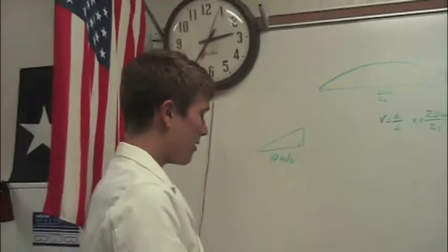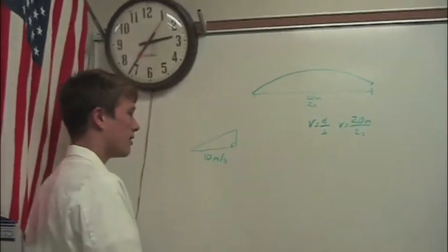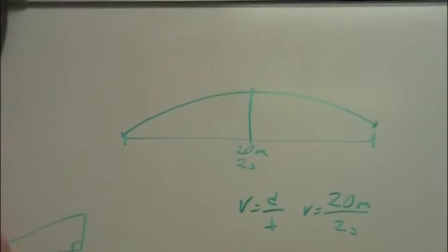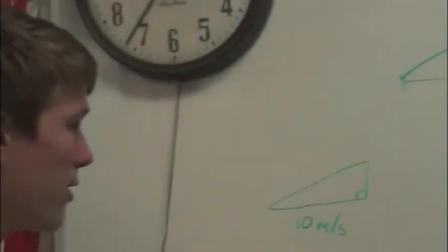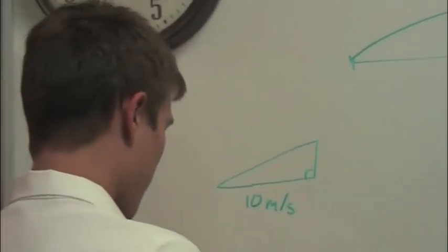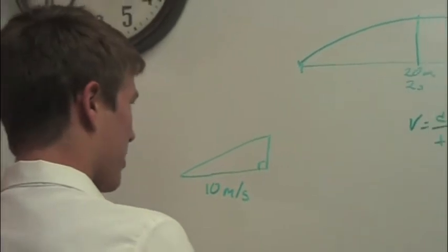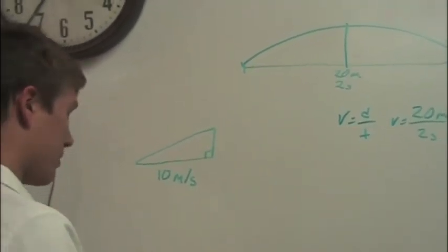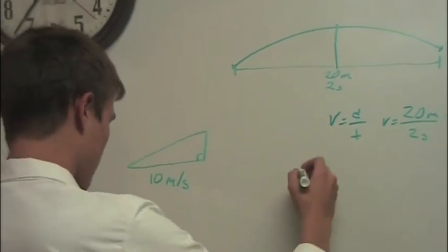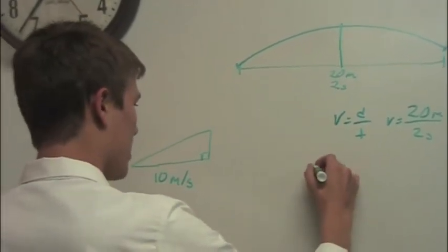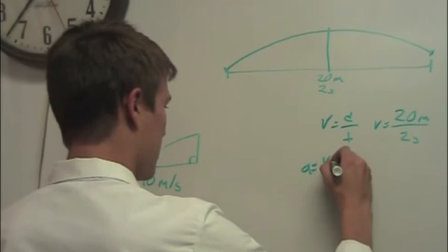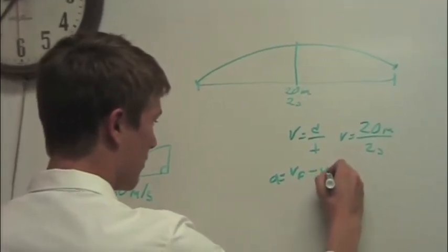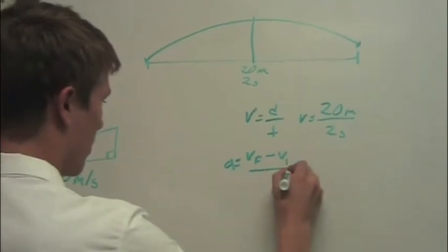The ball reaches its highest point at approximately 1 second into the throw, because the highest point would be the midpoint of the throw. In order to find the vertical component, we need to look at one of the acceleration formulas.